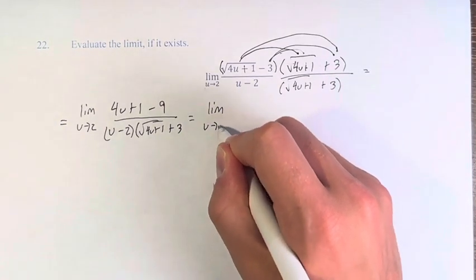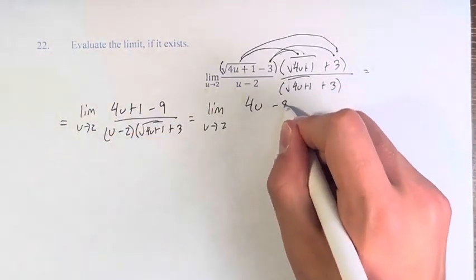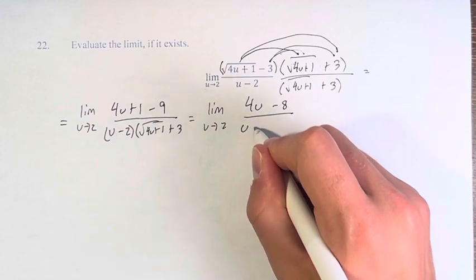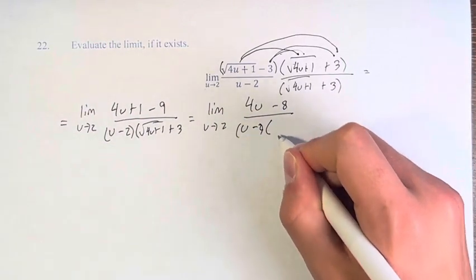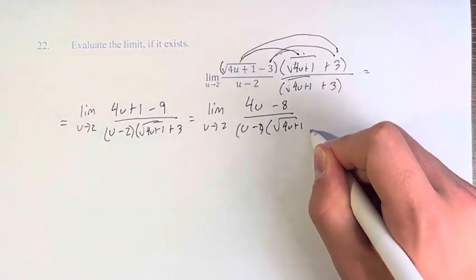So this is equal to 4u minus 8 over u minus 2 times the square root of 4u plus 1 plus 3.